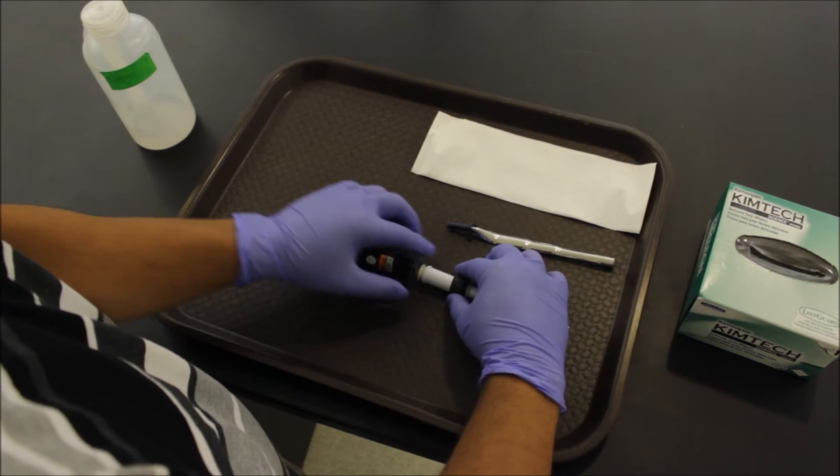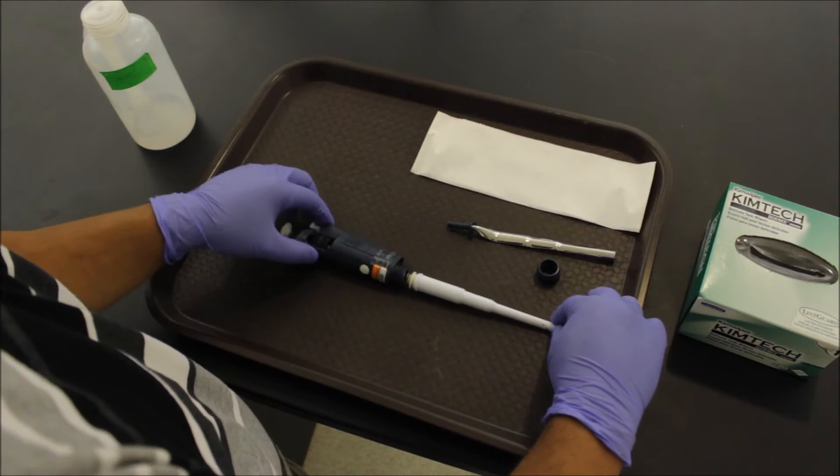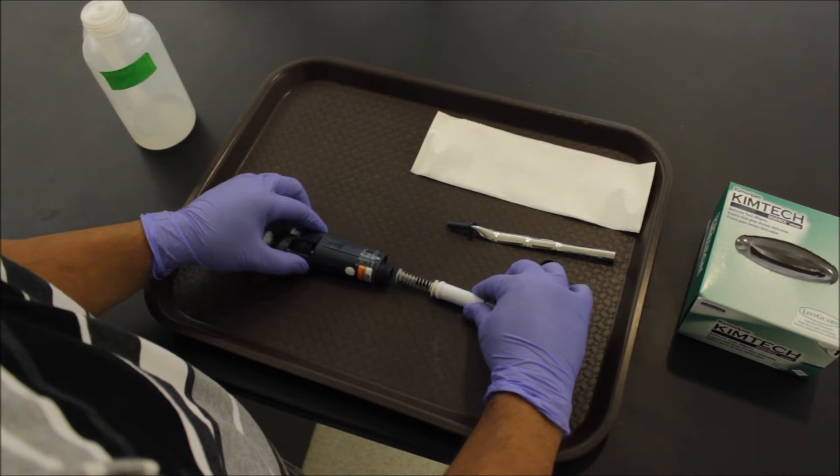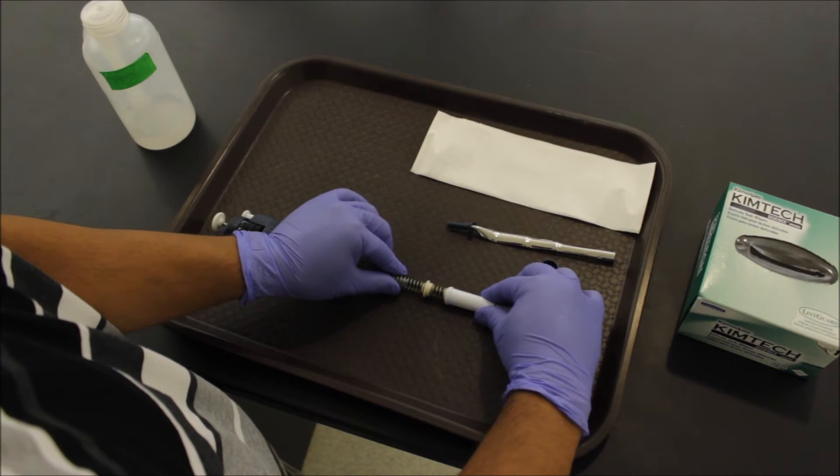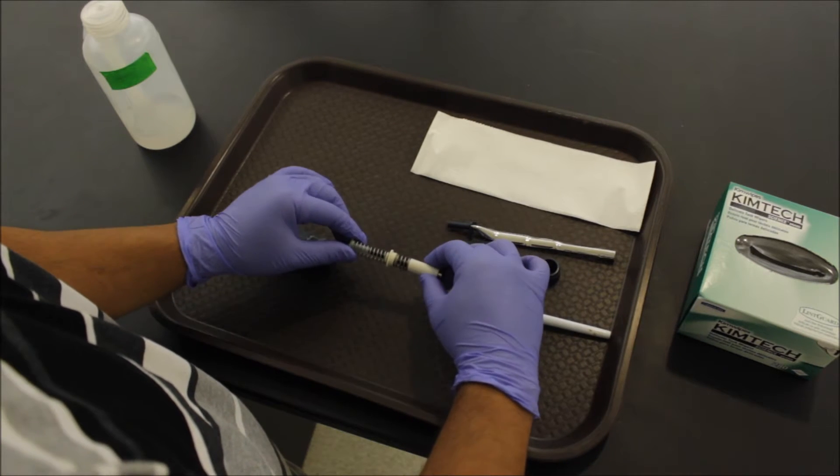Slowly take the nut off. Then remove the barrel. Take out the spring assembly and watch for an O-ring in smaller pipettes.